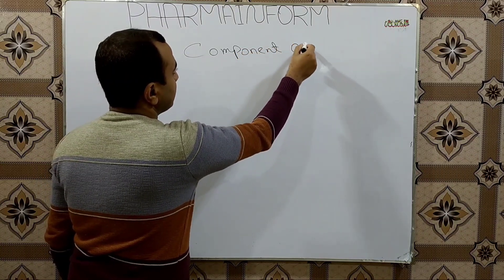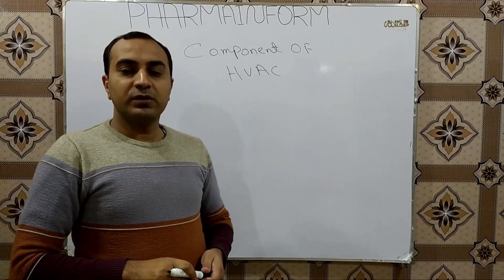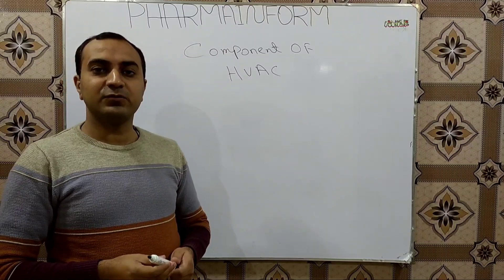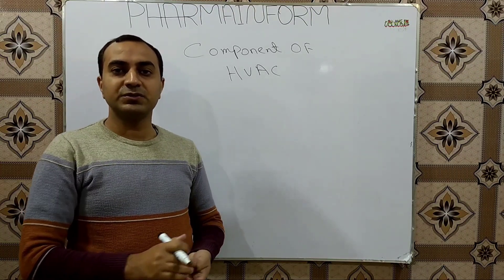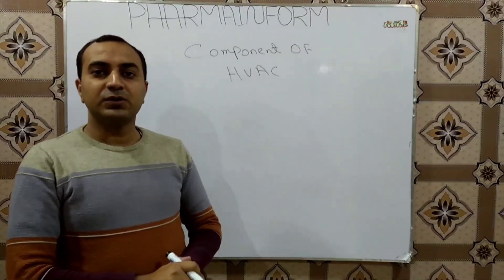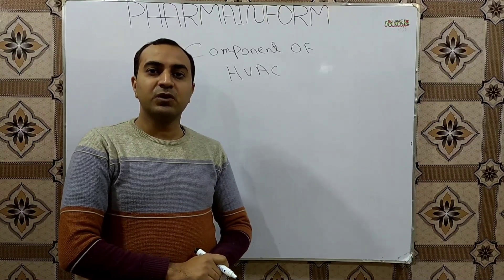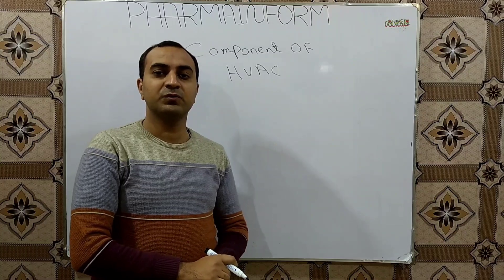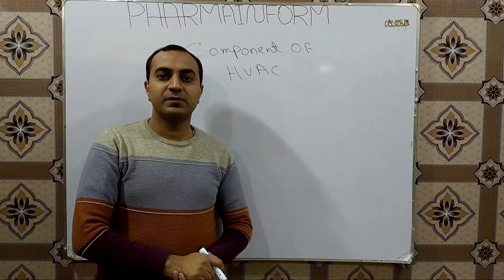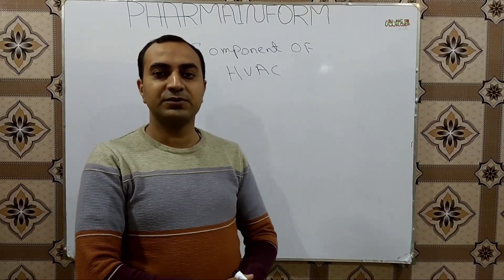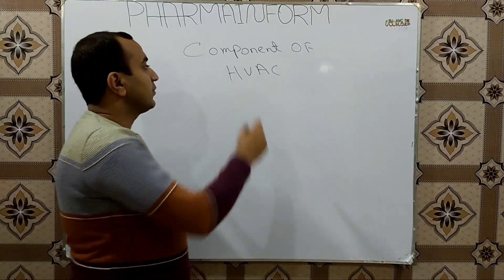In this video we will learn about different components of HVAC. As we know, heating ventilation and air conditioning is a system, and a system is built of different components which work together to provide the basic function. The heating ventilation and air conditioning system consists of three main components. In this video we will learn about those three components, and in the next videos we will discuss each and every component in detail.